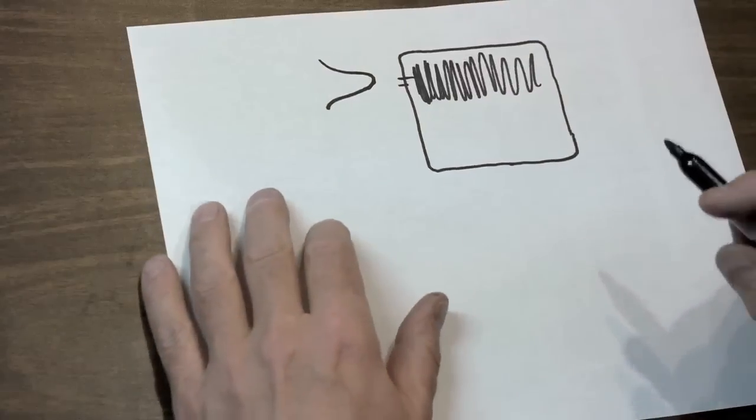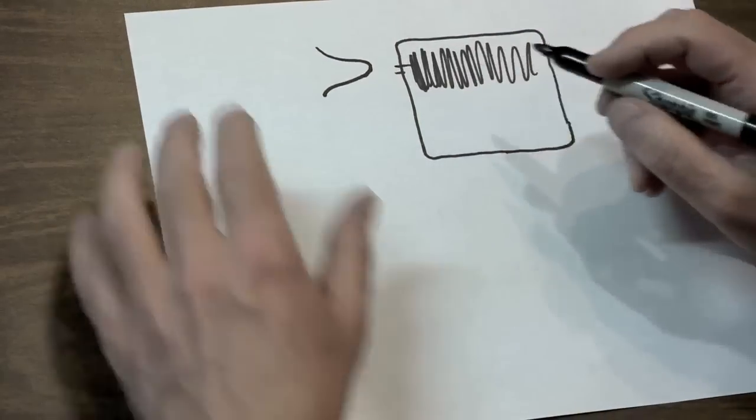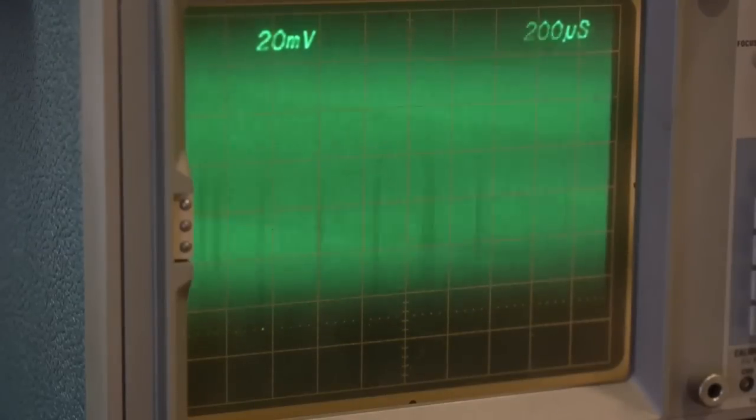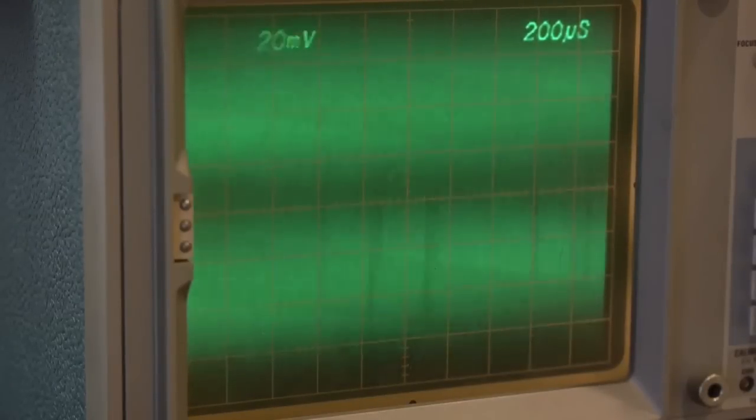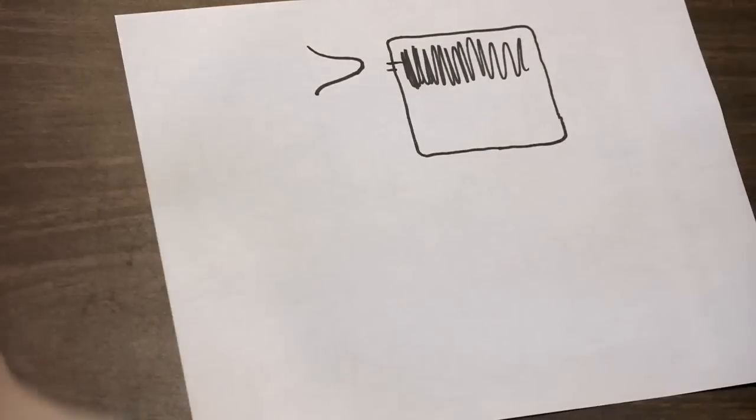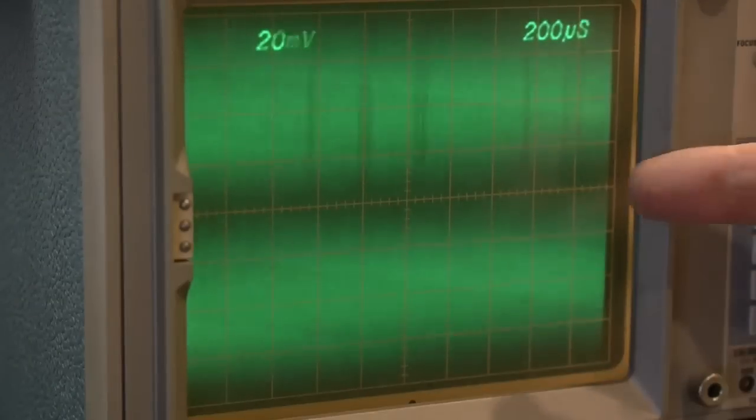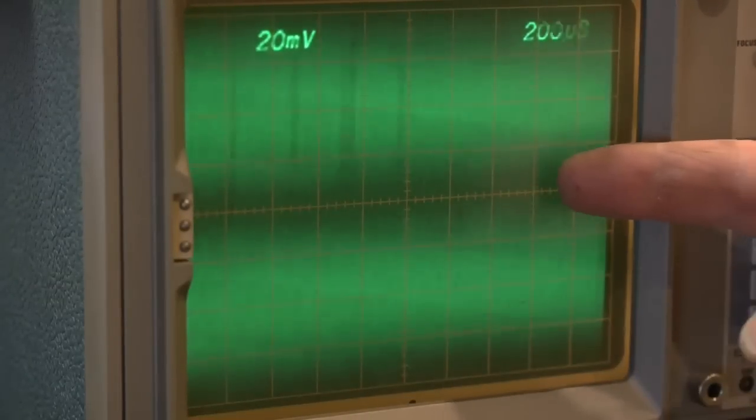So here's the clever idea. What I'm going to do is just put the scope in dual trace mode, simply two copies of the signal. Notice if you look at the screen, we have the two noise waves and kind of this dark band in between.